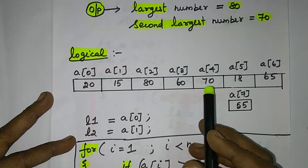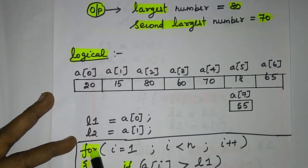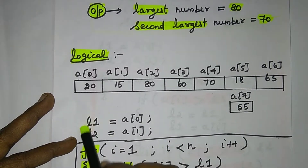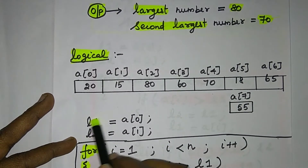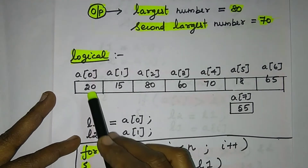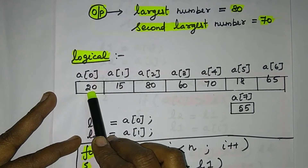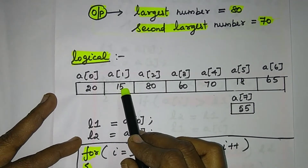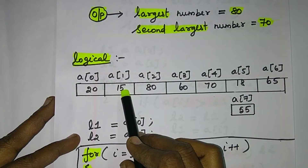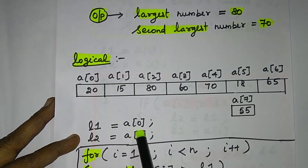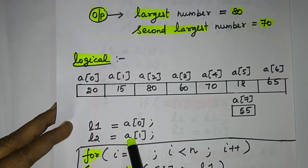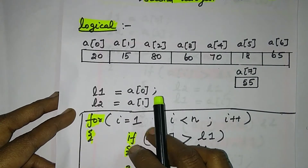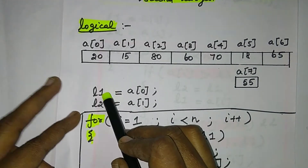L1 is 18 and L2 is 17. We need to choose one variable. L1 is the first element and L2 is the second element. L1 is initialized to the element at index zero, and L2 is the second element.